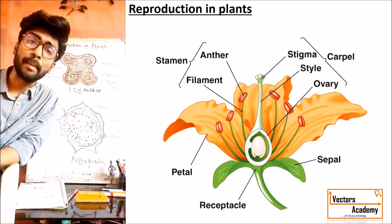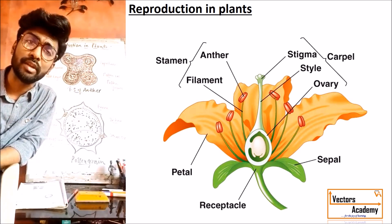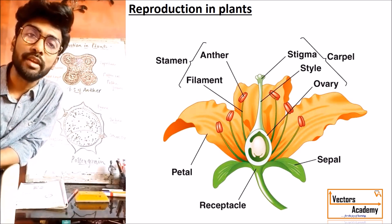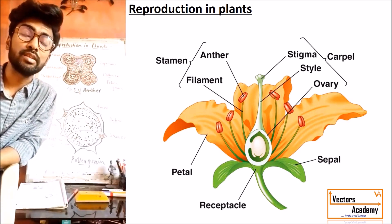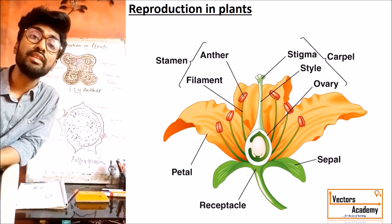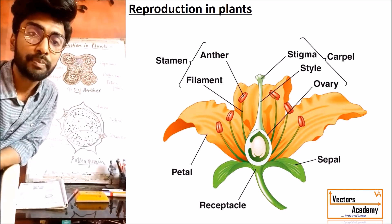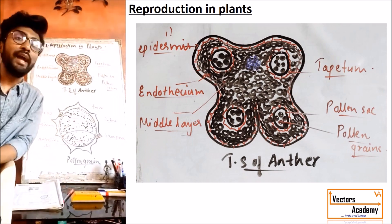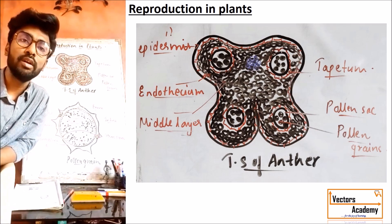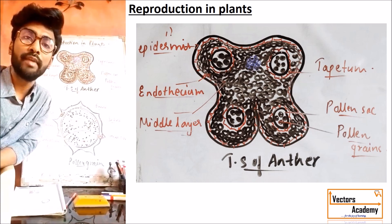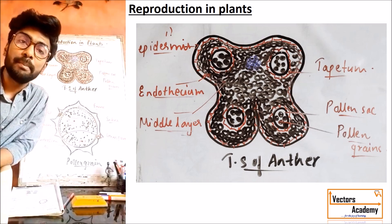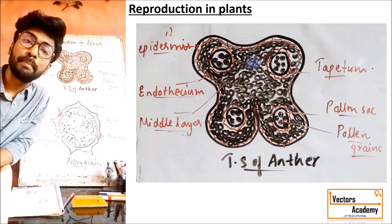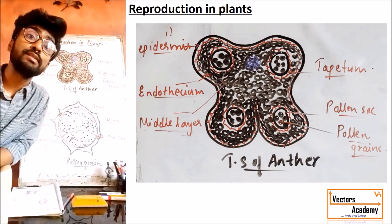The stamen is generally made up of a long slender structure called filament, a second part called anther, and the anther is divided into two parts by a segment called connective. Now we come to the structure of the anther. We are going to study the transverse section — the internal structure of anther. Anther is the male part of a flower, and the stamen is made up of filament, anther, and connective.